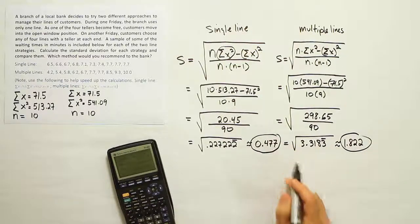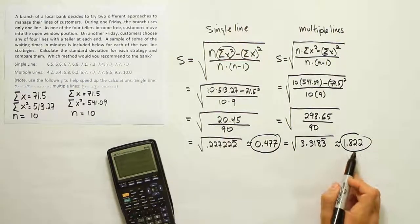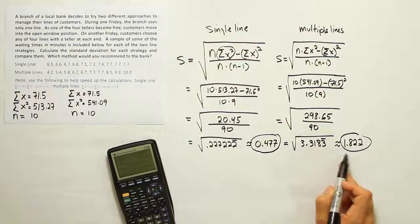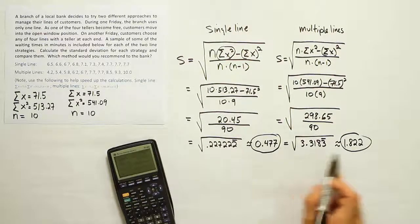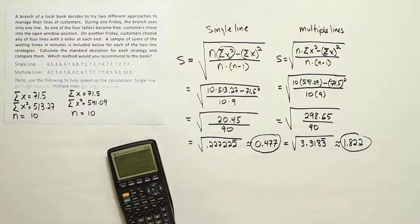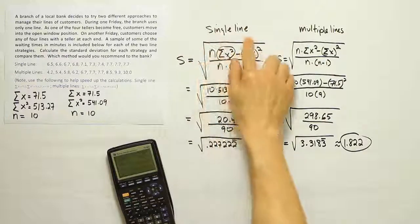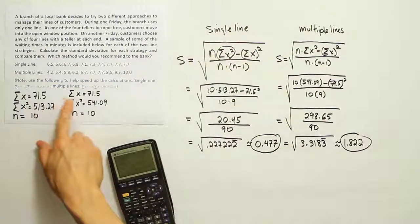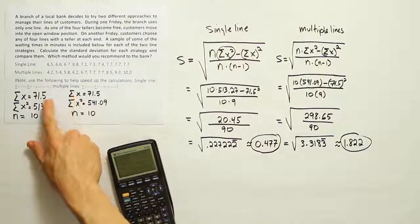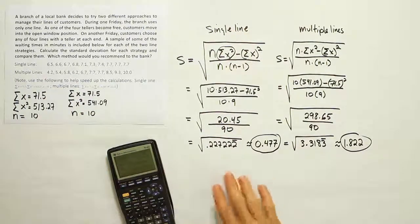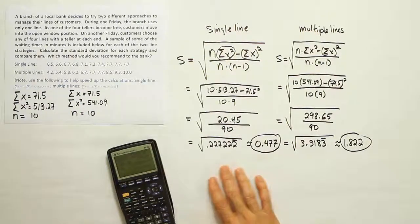Okay, so let's compare these two numbers. Clearly, for the multiple lines, we have a bigger value. We get almost two minutes. And here we get about half a minute. And this is the standard deviation. What this means is that for the single line, we have a more consistent wait time. In fact, if you look at the summation of x for both groups, the summation of x is the same. And what that basically means is that the average is the same. So the average amount of time that people wait at this bank is the same.